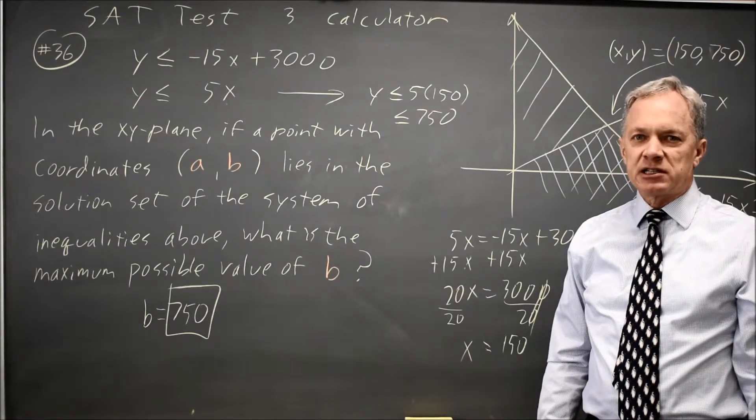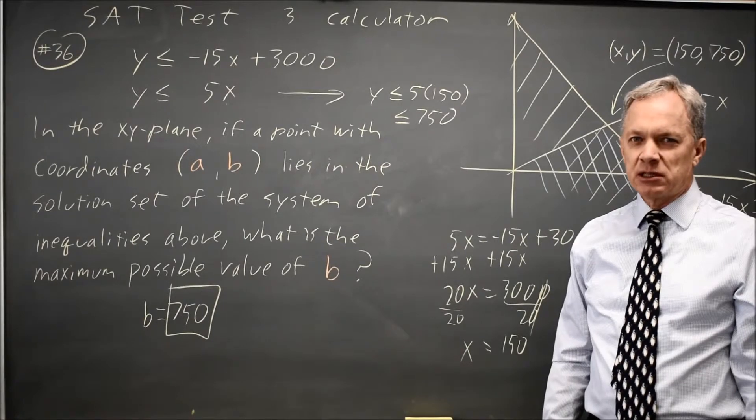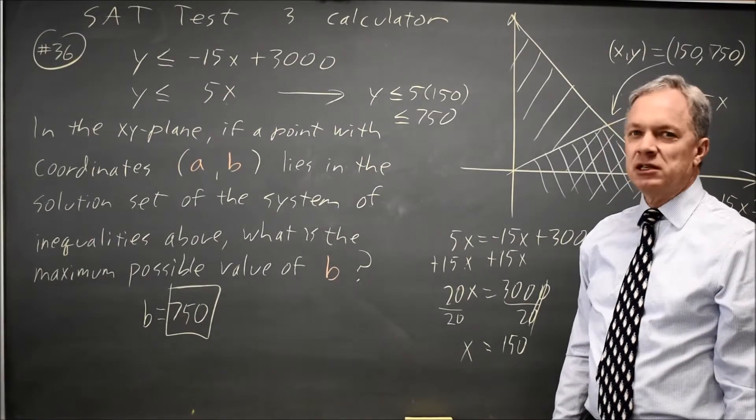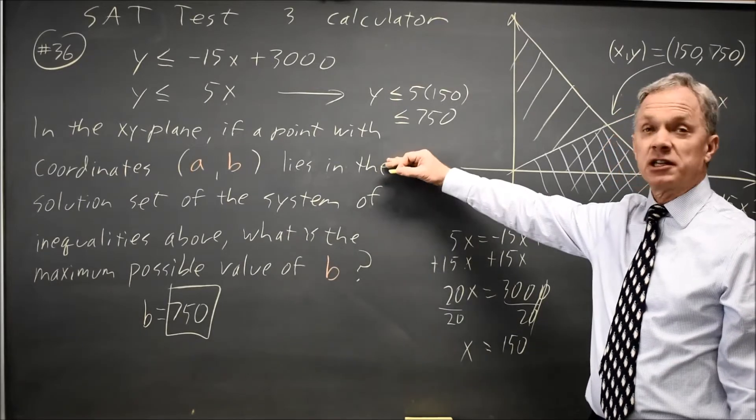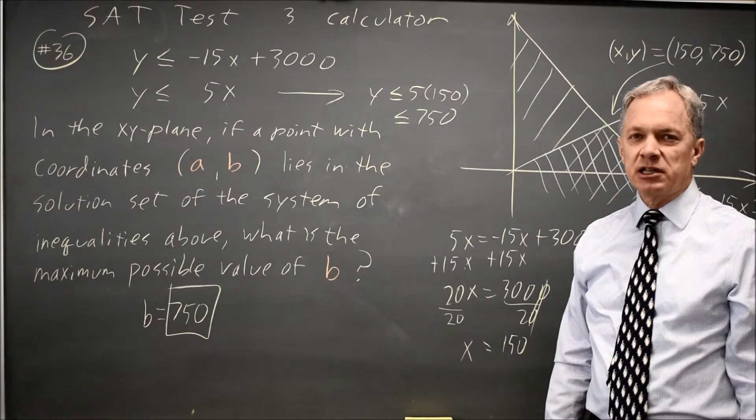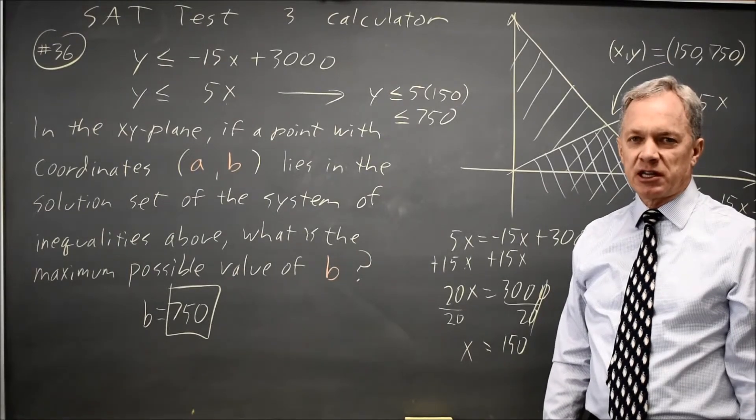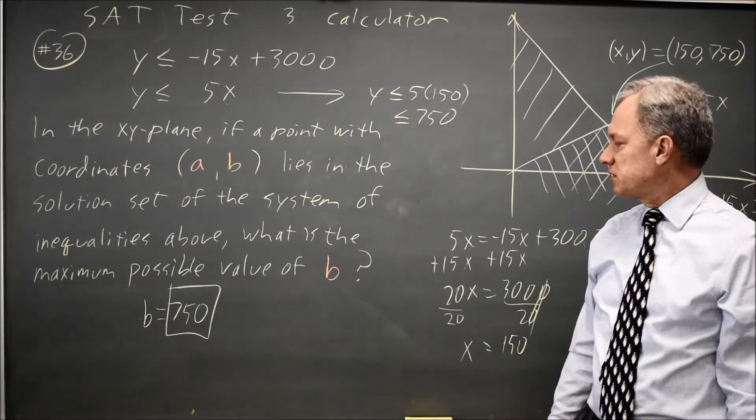The College Board always asks at least six systems of equations problems, and typically one of them will be a system with inequalities. So it's important to be very comfortable with these. In this case, since they're solved for y and it's a calculator question, the easiest way was to graph it on the calculator and find the point of intersection there. But you should be familiar with a variety of methods.